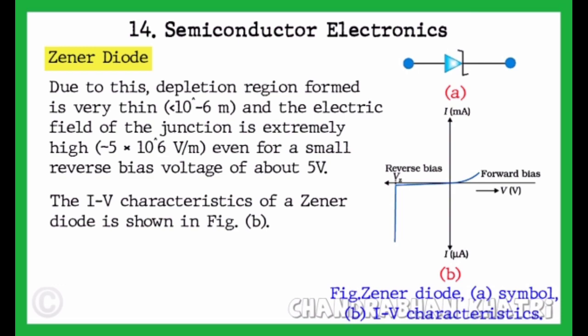even for a small reverse bias voltage of about 5 volt. The I-V characteristic of a Zener Diode is shown in figure B.